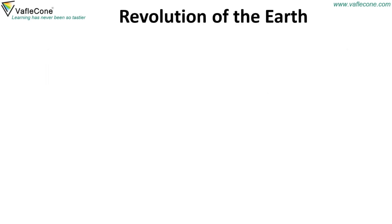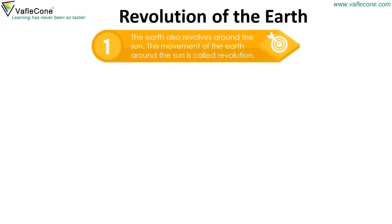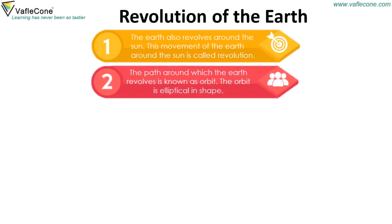Revolution of the Earth: The Earth also revolves around the sun. This movement of the Earth around the sun is called revolution. The path around which the Earth revolves is known as its orbit, and the orbit is elliptical in shape.